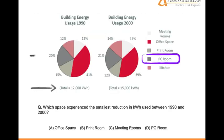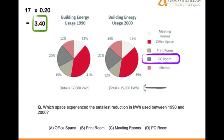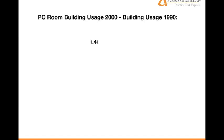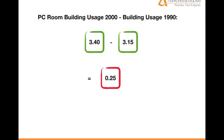And lastly, PC room: 17 times 0.20 equals 3.40. And 15 times 0.21 equals 3.15. So we have 3.40 minus 3.15 equals 0.25.